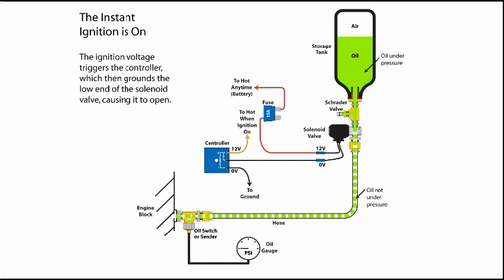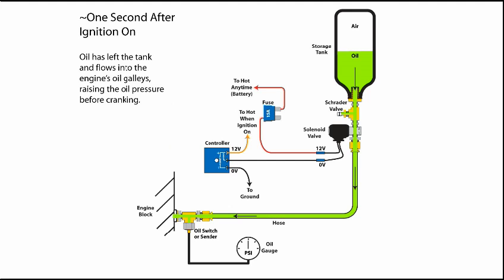This picture shows the instant the ignition is switched on. The ignition voltage triggers the controller, which in turn grounds the bottom end of the solenoid, completing the circuit and powering it so it can open and allow flow from the storage tank to the engine. About a second later, the oil is moving out of the storage tank and into the oilways of the engine, raising the oil pressure.